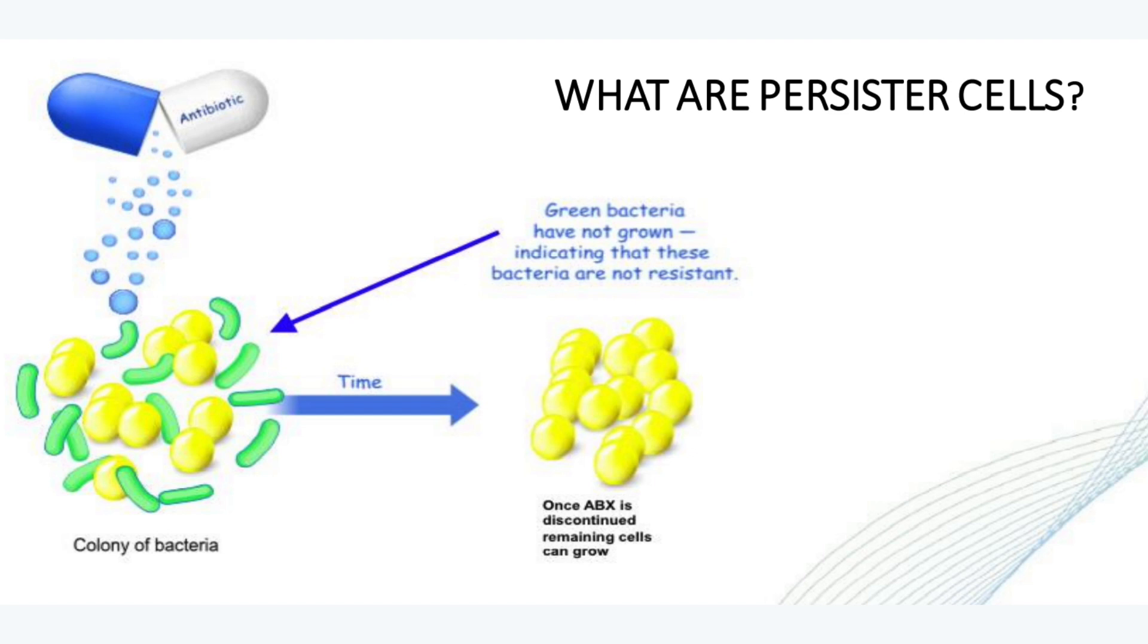So in this illustration we have a green bacteria and a yellow bacteria. These are actually meant to illustrate they're the same bacteria, they're in different forms. The green is the normal form we think about in which antibiotics are very useful. This is the main form the bug is in.